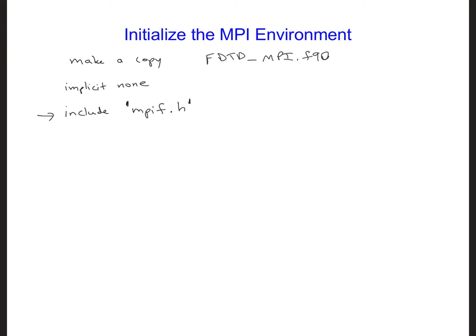Next, we're going to initialize the MPI environment, and this is the point in your code where the program will change from a serial code to a parallel code, meaning the processors will be aware of each other starting at this point.